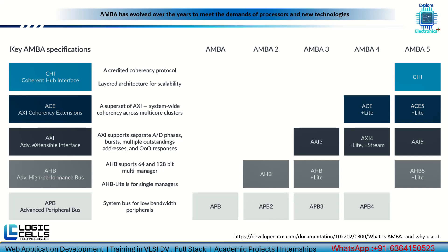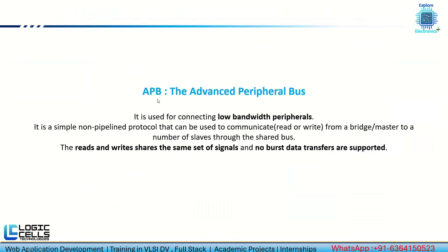APB — Advanced Peripheral Bus — is used for connecting low-bandwidth peripherals. It is a very simple, non-pipelined protocol with no parallel processing. It can be used to communicate via write or read from a bridge or from a master to a number of slaves through a shared bus. Read and write operations use the same set of signals, and burst data transfers are not supported.